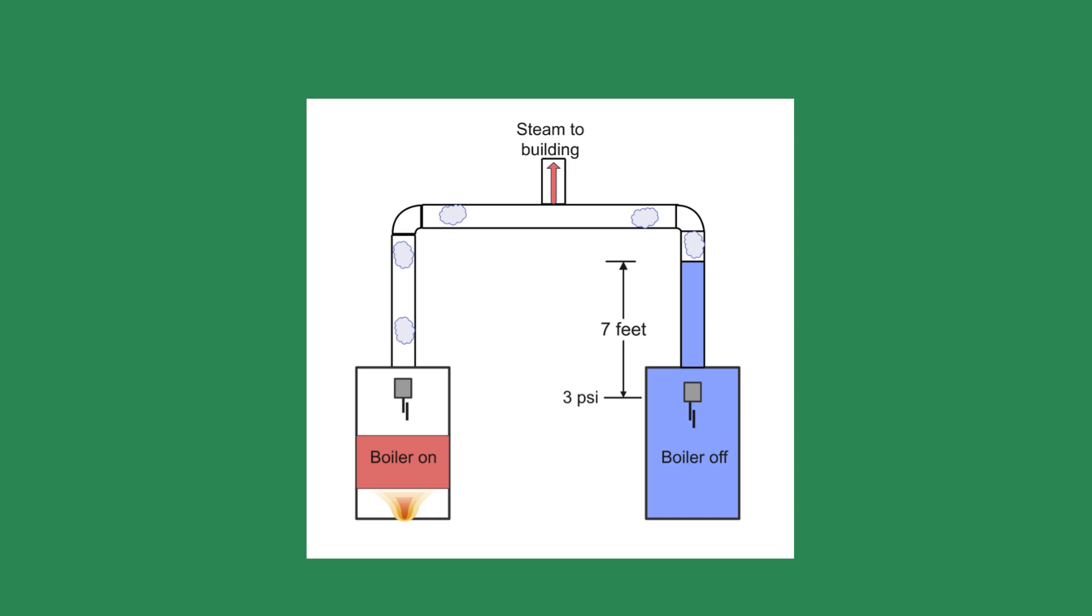In this system, the steam from the firing boiler filled the idle boiler. The steam condensed back to water inside the lag or idle boiler. Since the water was trapped inside, the level kept rising.